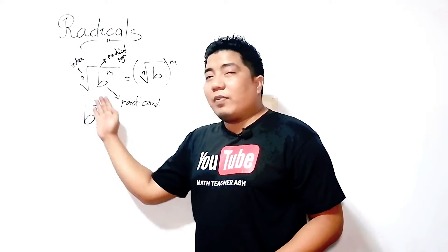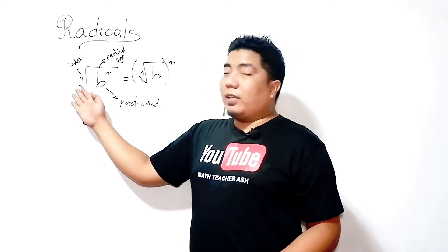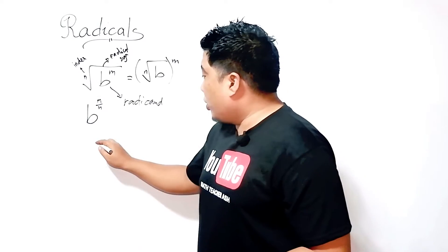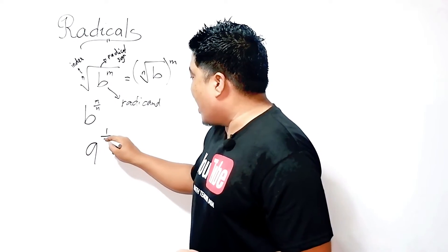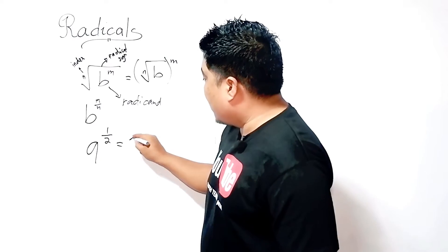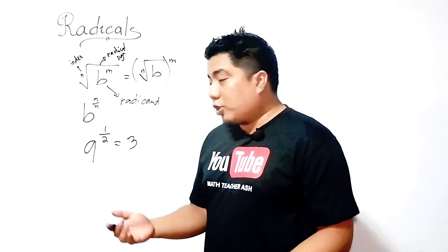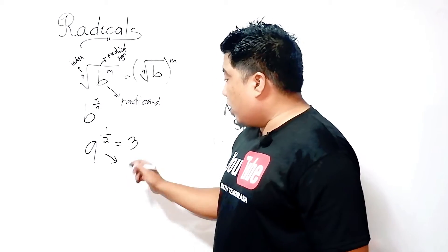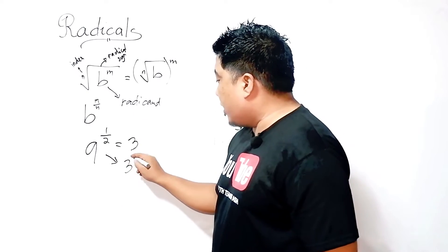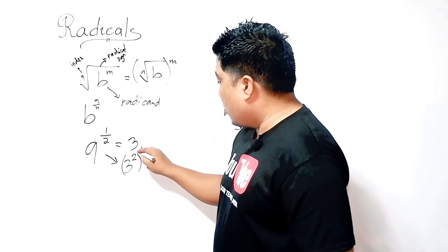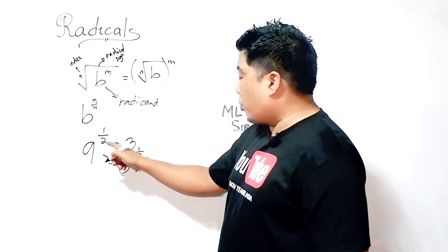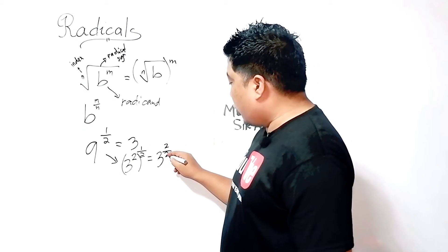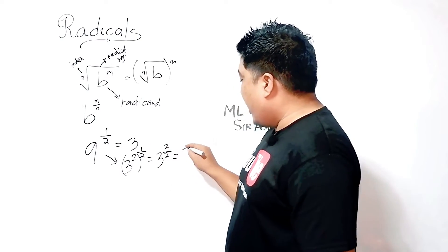From this given expression, you can convert that into this form. If you can still remember our example in rational exponents — 9 to the power of 1 half, which is simplified as 3 — on the previous discussion, we used the law of exponents, in which 9 was converted into 3 squared, and then we applied our original exponent of 1 half. Applying the power rule, we have 3 to the power of 2 over 2, which simplifies to 1, giving us 3.